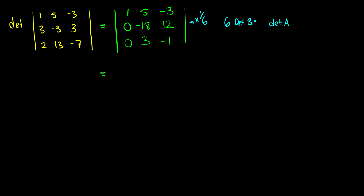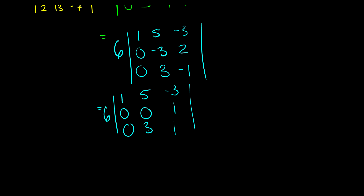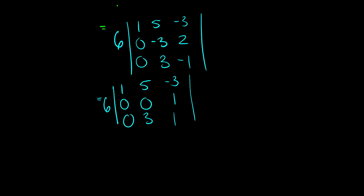Now we do more row replacement. We add the third row to the second row: -3 plus 3 is 0, and 2 plus -1 is 1. So the second row becomes [0, 0, 1], and the third row stays [0, 3, -1]. To get the determinant we want the product of the diagonal entries, but we need that 3 to be a zero — so let's do some row swapping and swap the second and third rows.